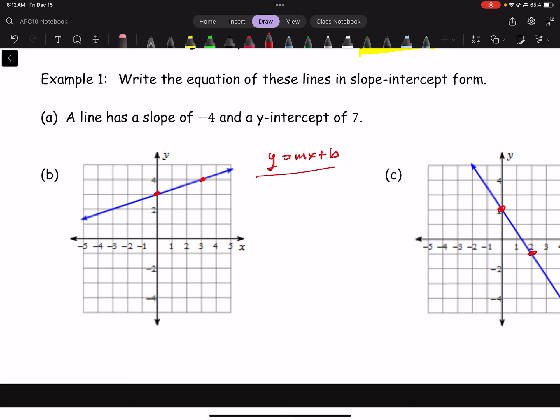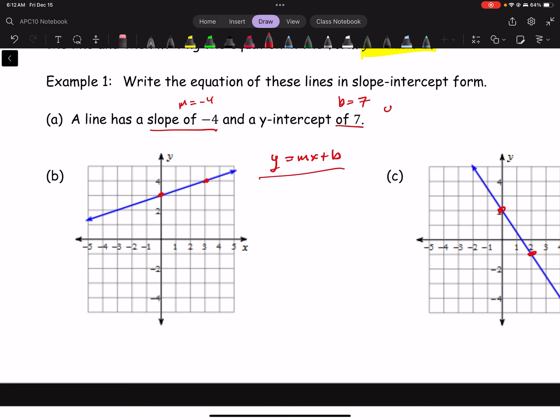Now you're responsible for being able to identify the slope-intercept form. So they are so kind to us in part a that they give us the slope and the y-intercept. Here m equals negative 4, b equals 7. So a line that has a slope of negative 4 and a y-intercept of 7 will have the equation y equals negative 4x plus 7.